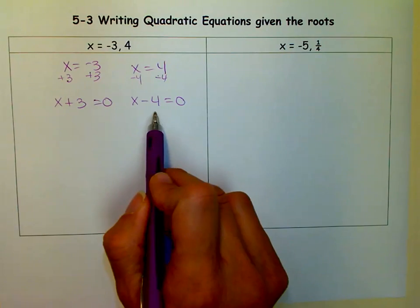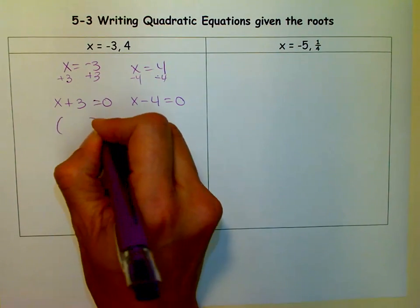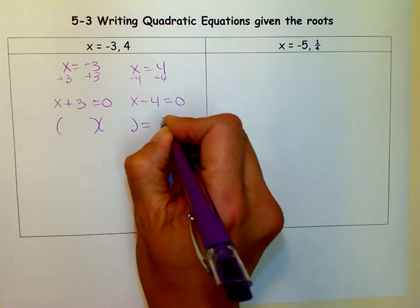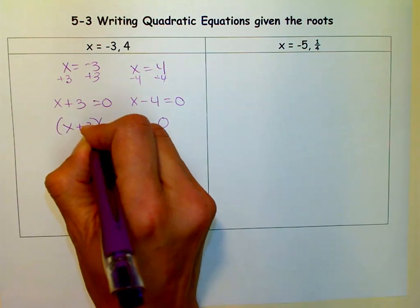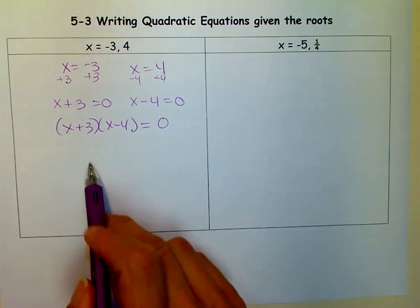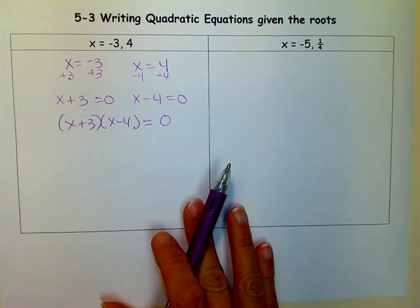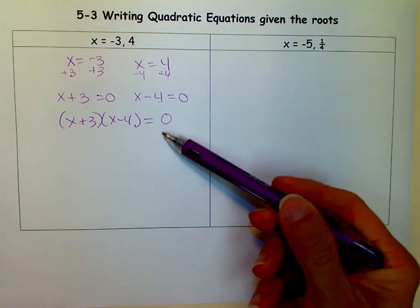And where did those come from when we were working backwards? Remember, they were in the parentheses after we factored. And so it was like x plus 3, x minus 4. And then we set each factor equal to 0. So we're just kind of working backwards.